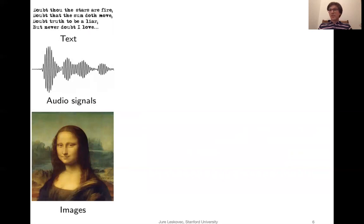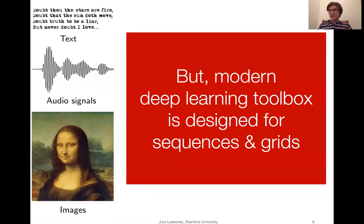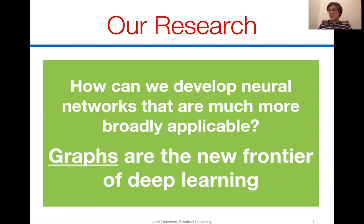The biggest advancements so far have happened in natural language processing, text processing, speech recognition, and computer vision. We realize that our current deep learning toolbox is designed for very simple data types — basically linear sequences like text and audio, or grids and fixed-size matrices like images. The key research question my group at Stanford is addressing is how to develop neural networks applicable to complex data types, in particular graphs and relational data, which are becoming the new frontier for deep learning.